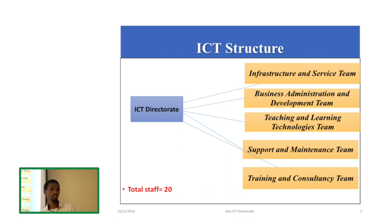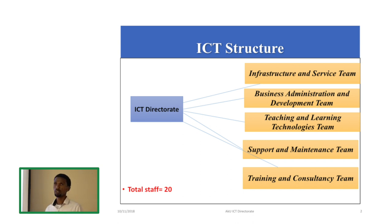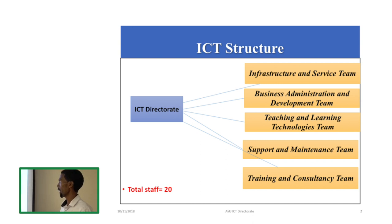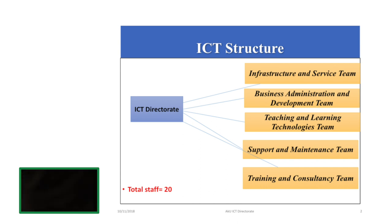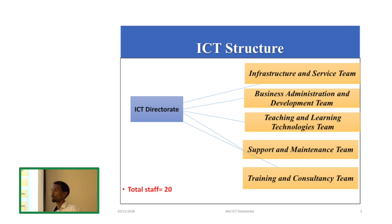Starting with the ICT Directorate structure, we have five teams. The Infrastructure and Service team is responsible for the network infrastructure of the campus. The Business Administration and Development team is responsible for automation and business-related activities. Teaching and Learning Technologies is responsible for e-learning, technology learning, and website administration. Another team is Support and Maintenance, which maintains all ICT materials across all campuses, since ICT Directorate manages all campuses centrally. The last one is the Training and Consultancy team.